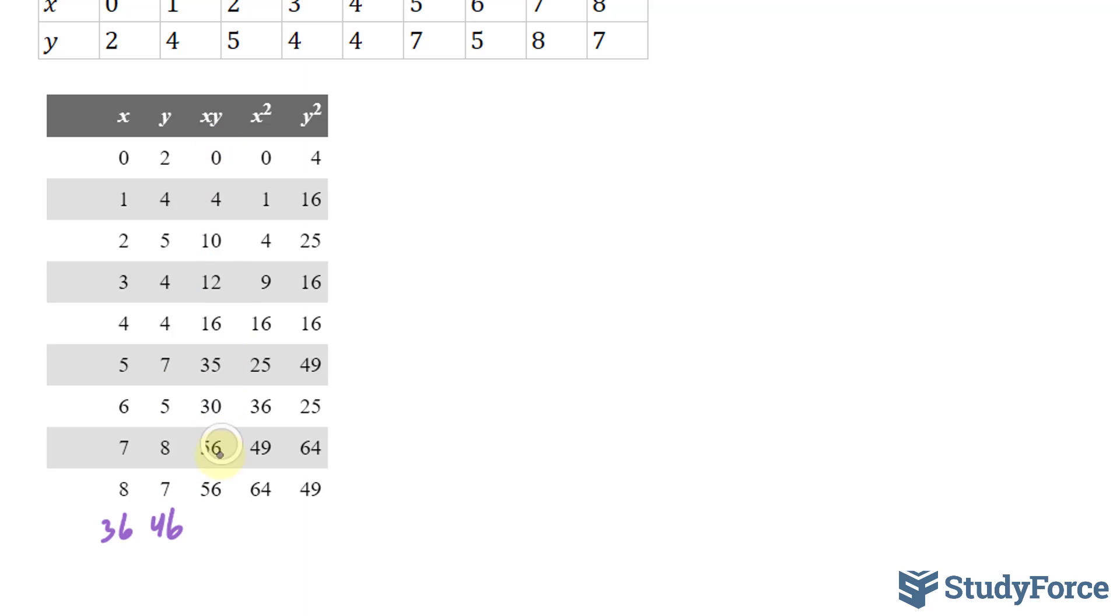I'll use my calculator for this column. And if you do it correctly, you should end up with 219. I'll use my calculator for this column as well. Once again, you should end up with 204. And adding all these numbers up gives you 264.